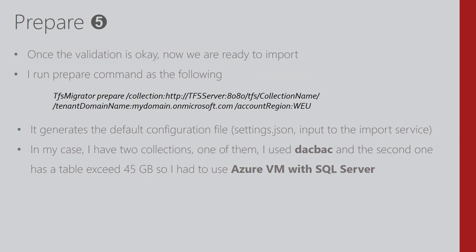Once validation is clean, we run the prepare command. To run it I need the Azure Active Directory tenant ID. I pass the collection, the Azure AD tenant, and the region — the region must match the Azure AD region. This generates a settings file in JSON format.